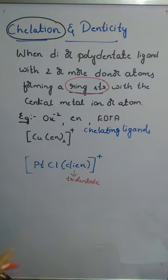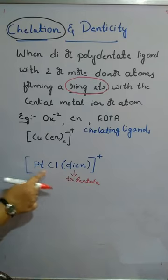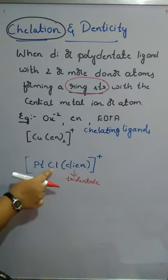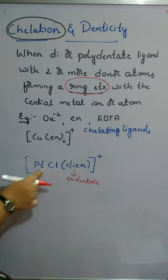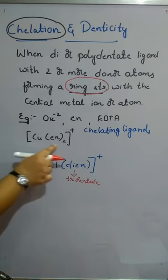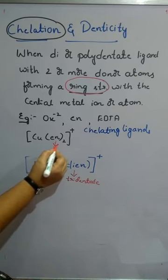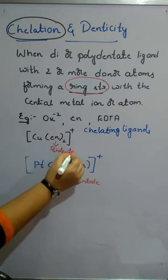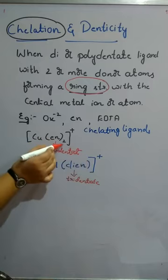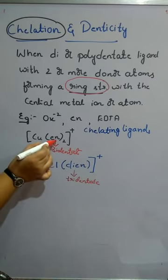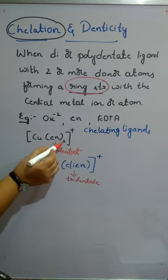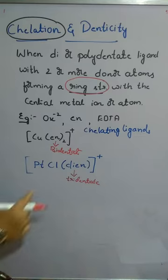In this example, the central metal is platinum. It forms one bond with Cl and three bonds through the tridentate ligand's three donor atoms — giving four total bonds for platinum. Compare this to the previous example: two bidentate ligands, each forming two bonds, giving two times two equals four bonds for copper.